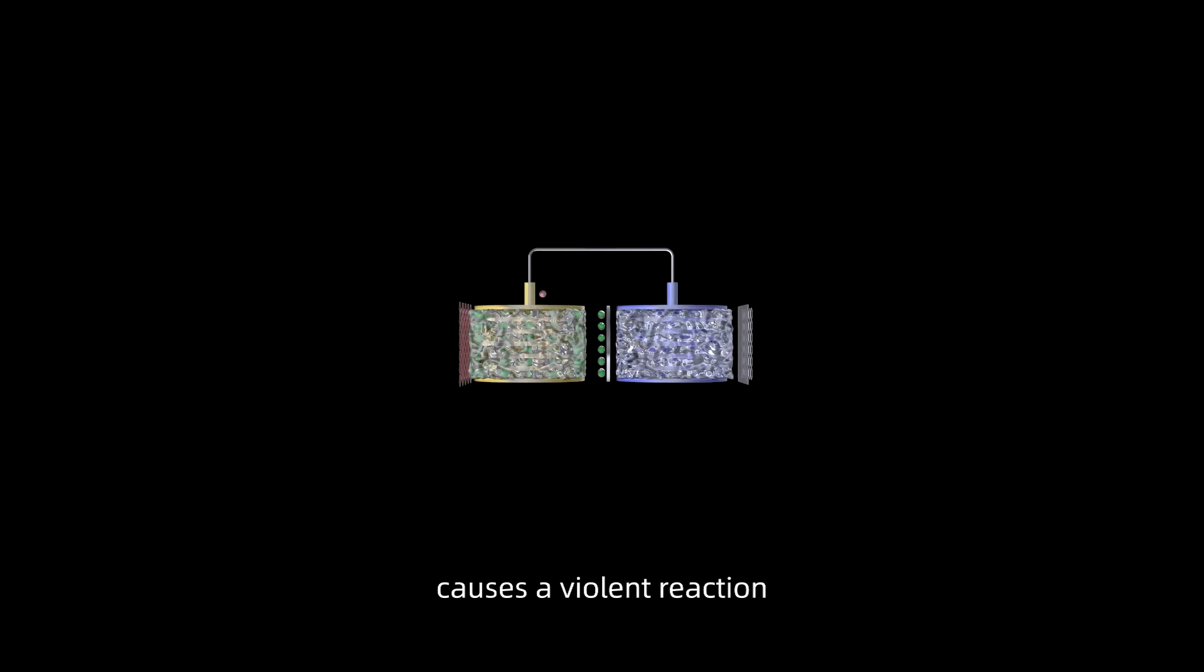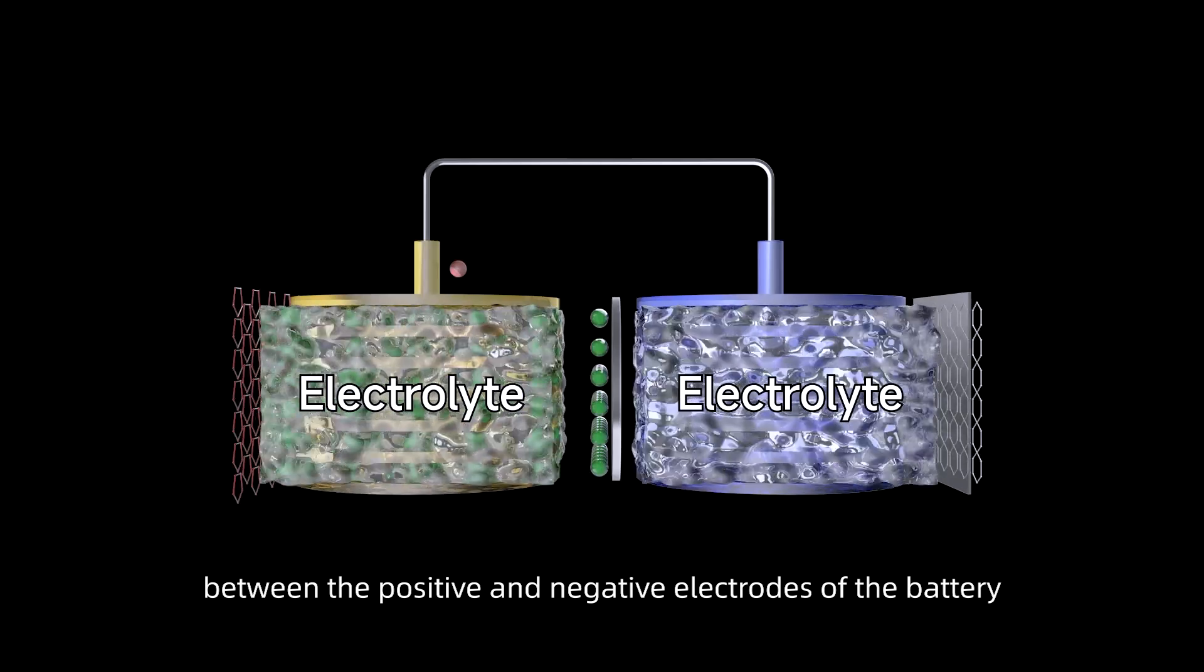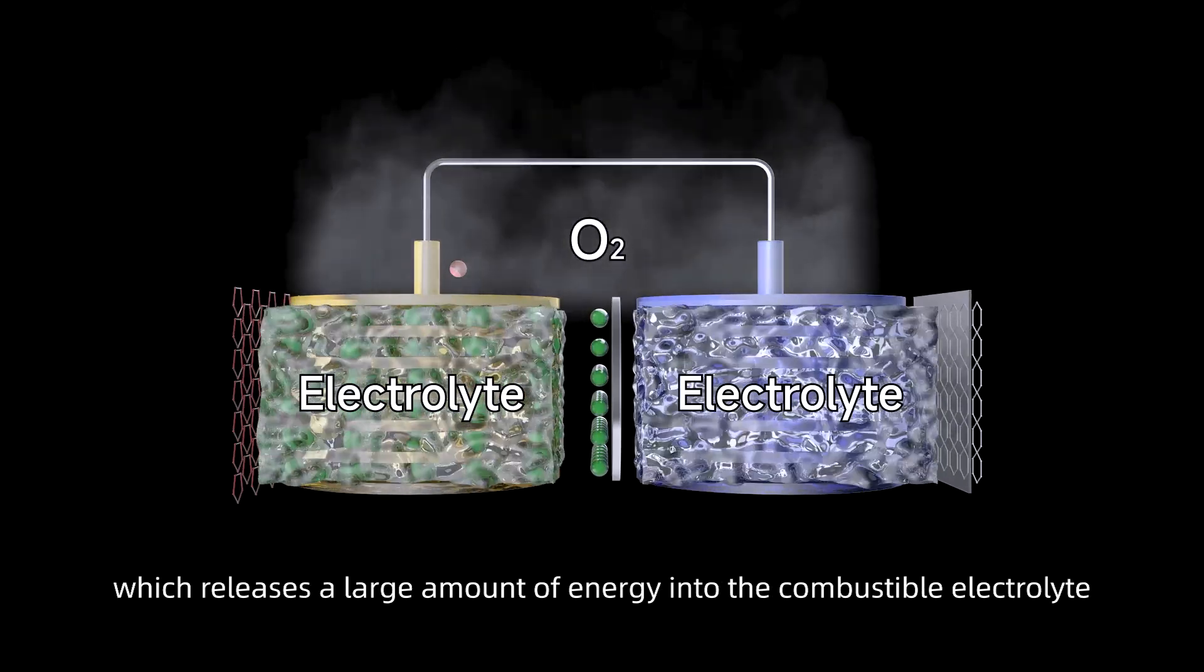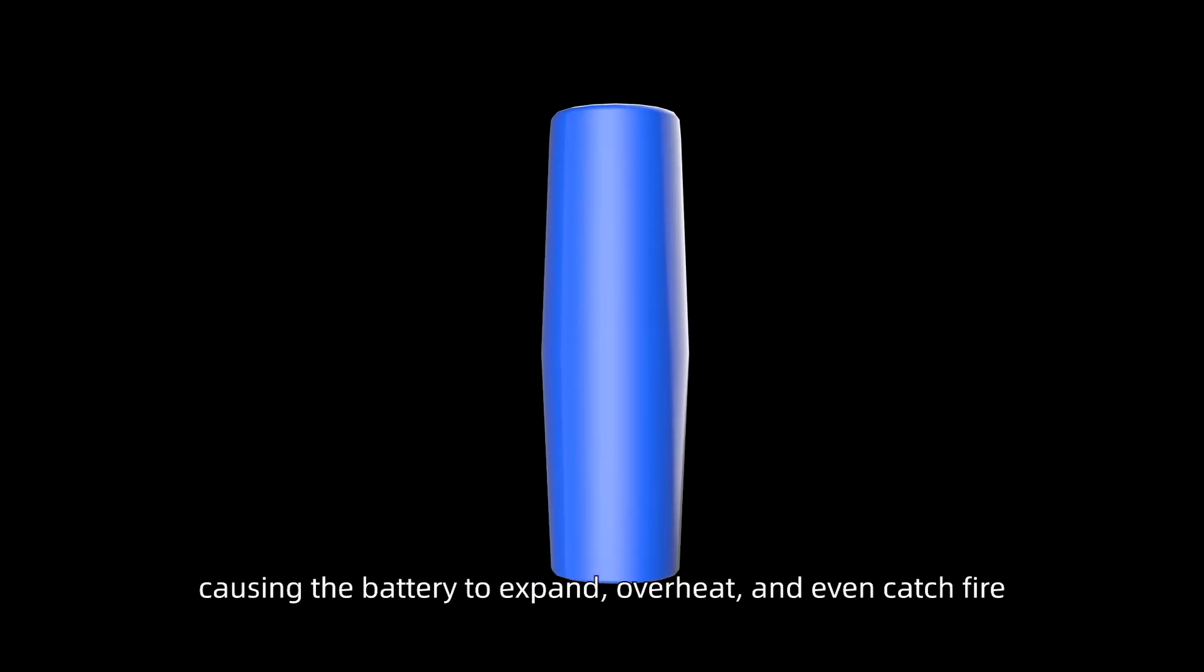First, the high temperature of the environment causes a violent reaction between the positive and negative electrodes of the battery, which releases a large amount of energy into the combustible electrolyte and releases oxygen, causing the battery to expand, overheat, and even catch fire.